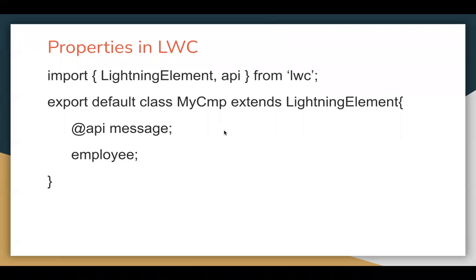In Lightning Web Component, whenever you need to create a variable it is known as a property, and that property is declared in the JavaScript file. You can recognize it as a JavaScript file because it uses an import statement and has a class extending Lightning Element. Here two properties are declared: message, annotated with the @api decorator, and employee, written directly. Both are correct.